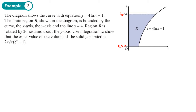Region R is rotated around the y-axis by 2π radians. Use integration to show that the exact value of the volume of the solid generated is 2π√e times (e² minus 1).